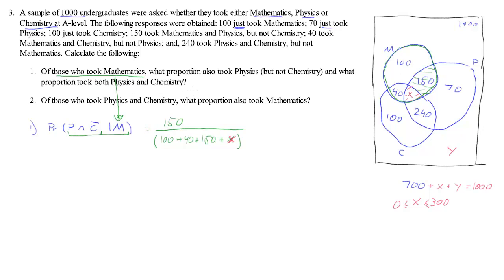And the second is what proportion took both physics and chemistry. So here we are after the probability of physics and chemistry conditional on maths. Let's look at this in light blue. So the conditioning is still the green. But now physics and chemistry, now we are interested in this red bit. So that is x divided by conditional on maths. So that's everyone who did maths. And that's the same as up here. So that's 100 plus 40 plus 150 plus our red x.